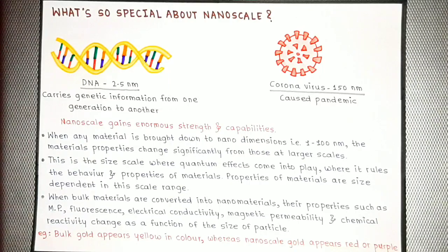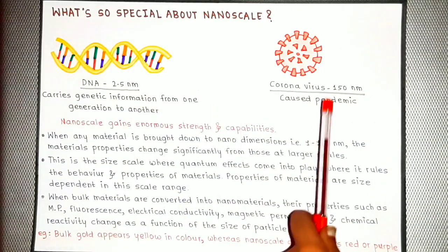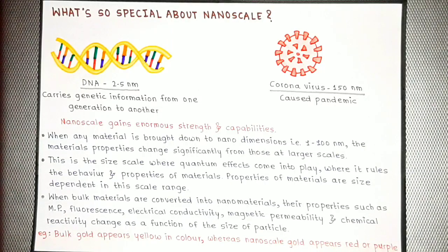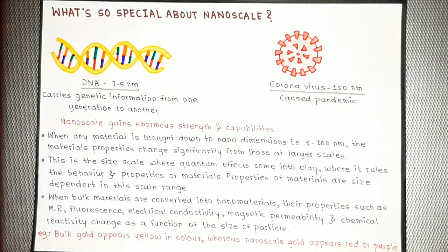Today we are all aware of the pandemic caused by coronavirus. The average size of coronavirus is just 150 nanometers, but the kind of devastation it has caused worldwide is huge and horrible. Hence, it's clear that the nanoscale gains enormous strength and capabilities and we cannot underestimate the power of nanoscale. When any material is brought down to nano dimensions — that is, 1 to 100 nanometers — the material's properties change significantly from those at larger scales. The properties of bulk materials are very different from the properties of nanoscale materials. This is the size scale where quantum effects come into play, ruling the behavior and properties of materials, which are size-dependent in this scale range.